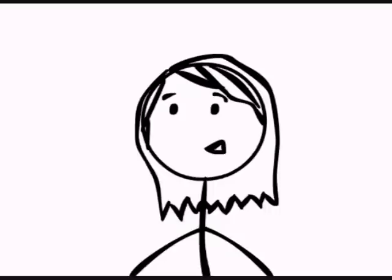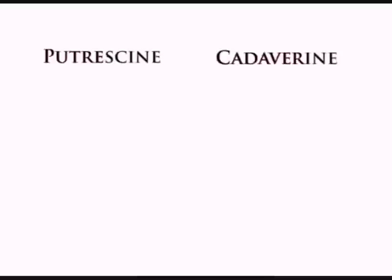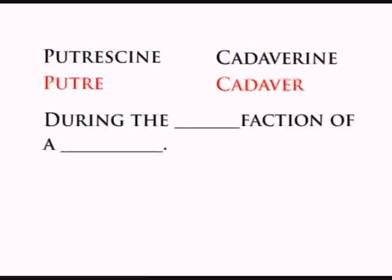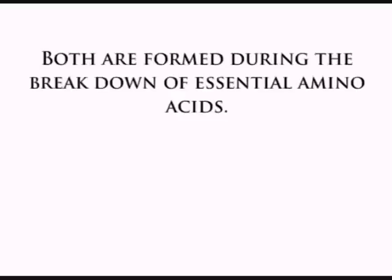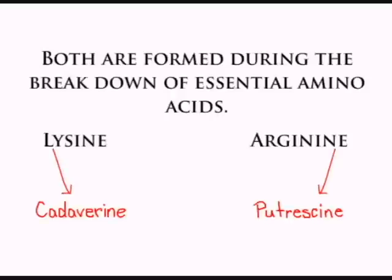Now that you know about amino acids, I'd like to introduce two new compounds: putrescine and cadaverine. These compounds are found exactly when and where you'd expect them to be — during the putrefaction of a cadaver. Both are formed during the breakdown of essential amino acids, such as lysine and arginine, which create cadaverine and putrescine respectively.